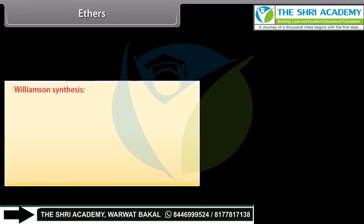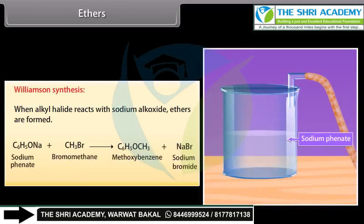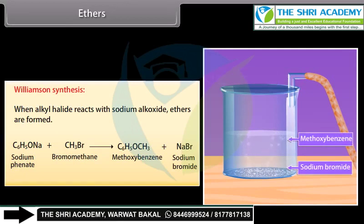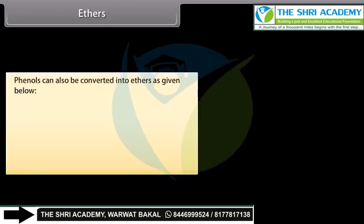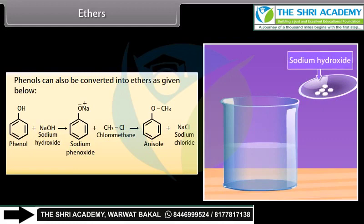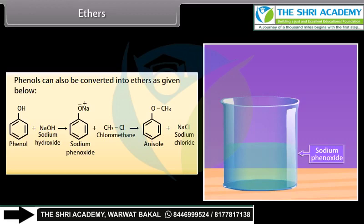Williamson synthesis: When alkyl halide reacts with sodium alkoxide, ethers are formed. Bromomethane is mixed with sodium phenate and it gives methoxybenzene and sodium bromide. Phenols can also be converted into ethers: on mixing sodium hydroxide into phenol, it forms sodium phenoxide; then on adding chloromethane, it forms anisole and sodium chloride.